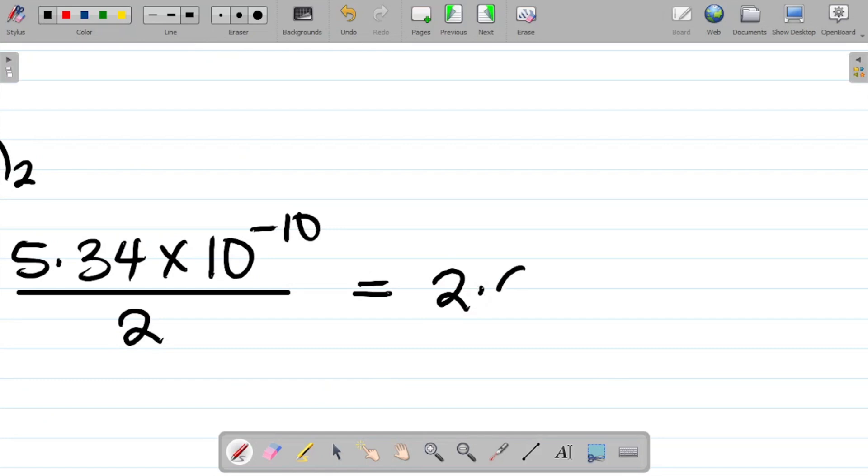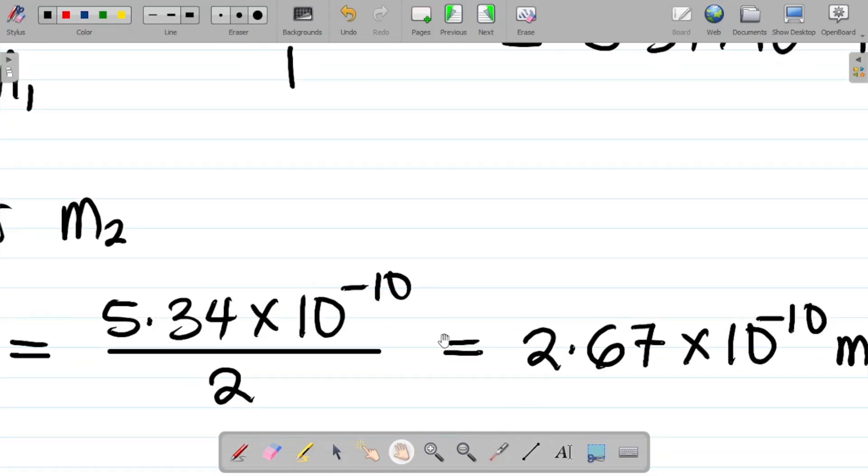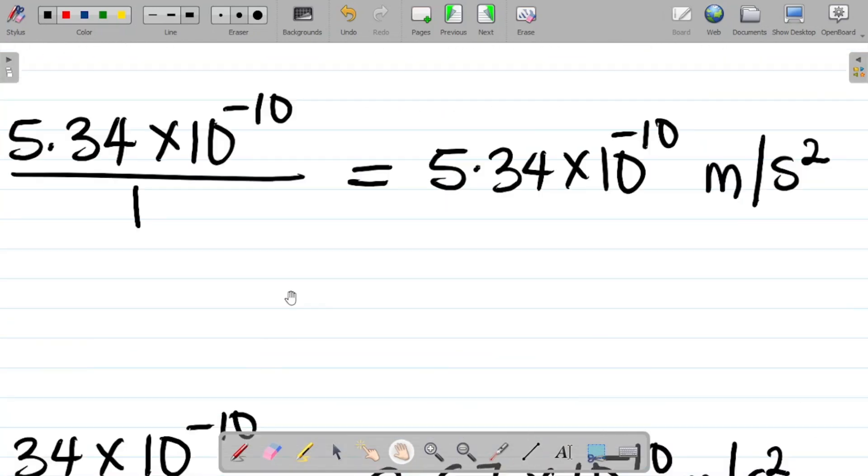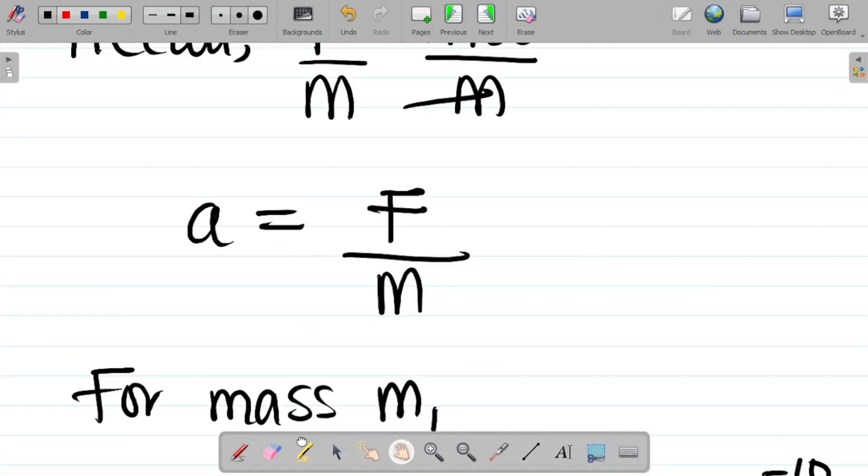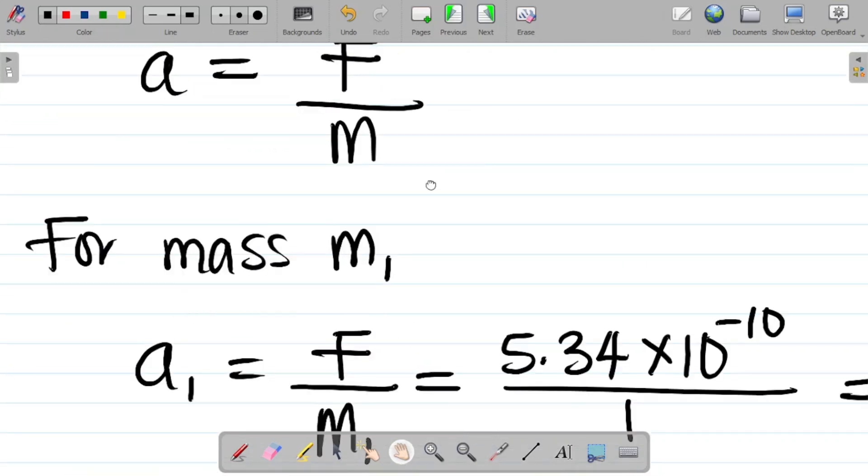If you punch this correctly, your answer should give you about 2.67, approximately 2.67 times 10 to the power minus 10. Of course, your unit for acceleration becomes meter per second squared. So basically, this is how you find the force between them and the acceleration or their initial acceleration. This is how you get that question.